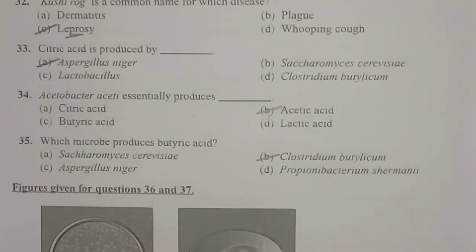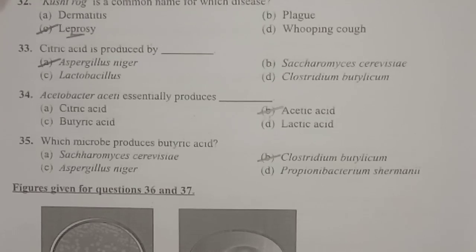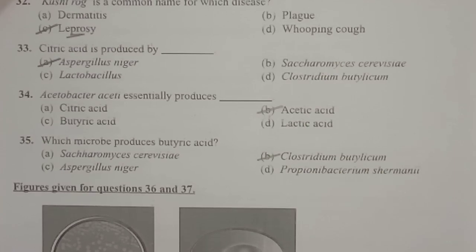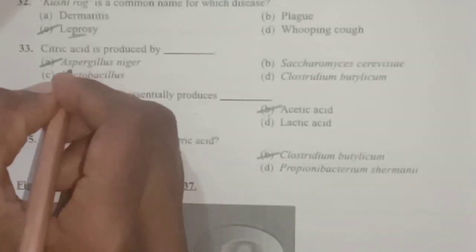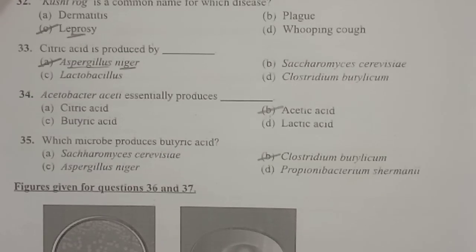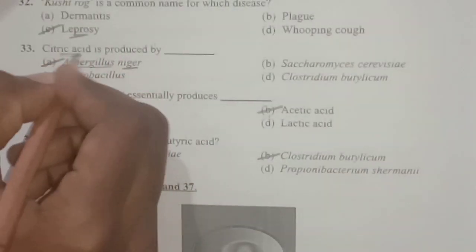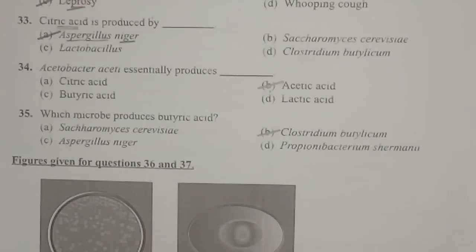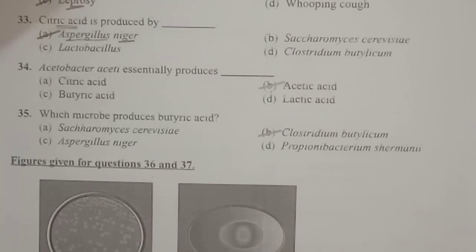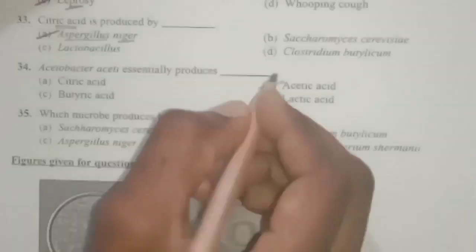Next: citric acid is produced by which microbe? Citric acid is produced by a fungus known as Aspergillus niger, which is used for industrial production of citric acid. Next: Acetobacter aceti — the name itself indicates it produces an acid called acetic acid.